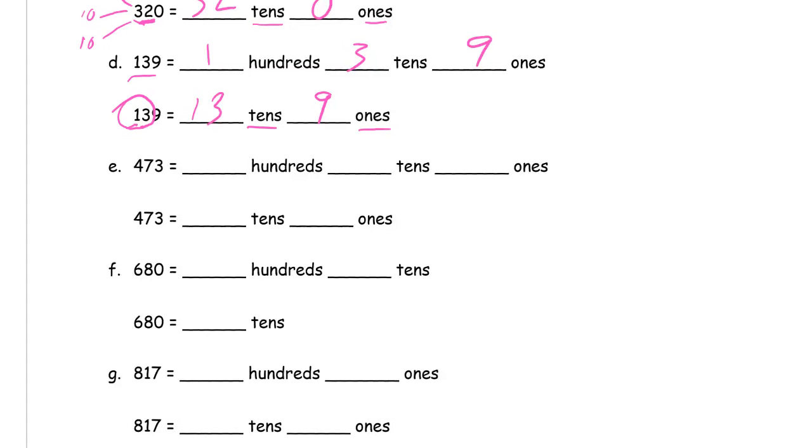For four hundred seventy-three. That's four hundreds, just like an HTO chart. You can still draw them. You've got plenty of room over here to draw these. Four hundreds, seven tens, three ones.